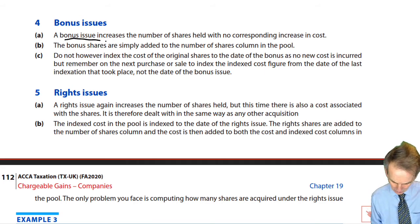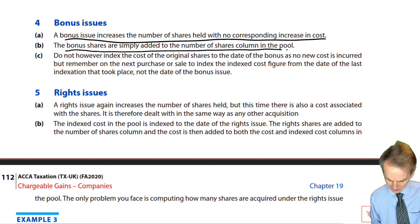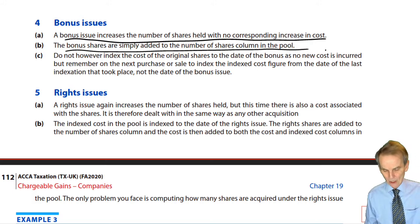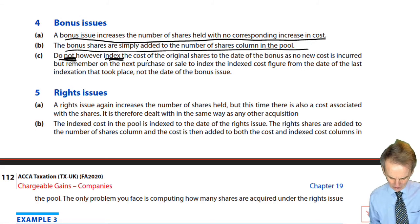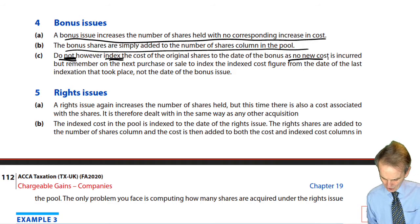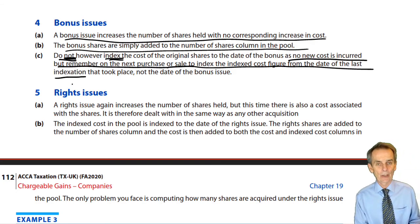A bonus issue increases the number of shares held with no corresponding increase in cost. The bonus shares are simply added to the number of shares column in the share pool. Do not, however, index the cost — do not index the cost of the original shares to the date of the bonus, as no new cost is incurred. But remember, on the next purchase or sale, index the index cost figure from the date of the last indexation.